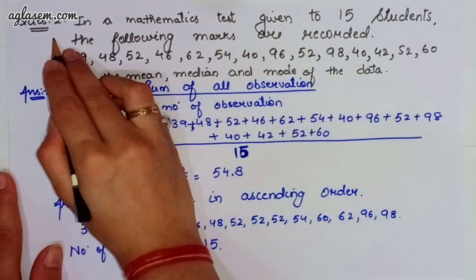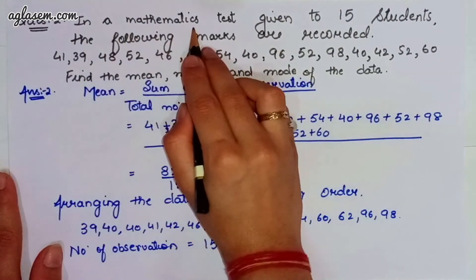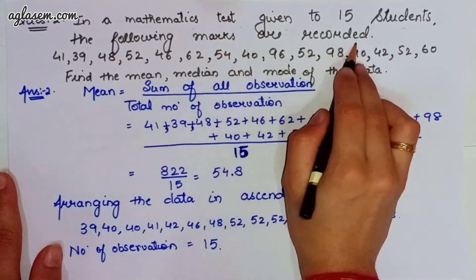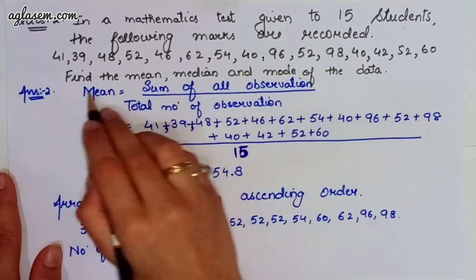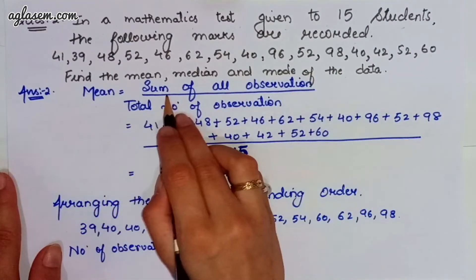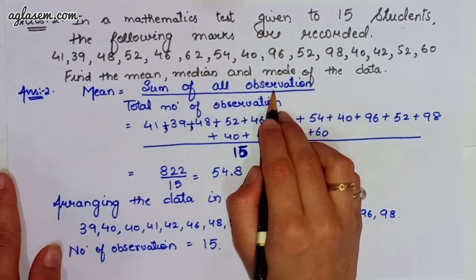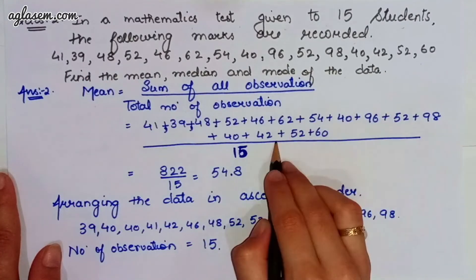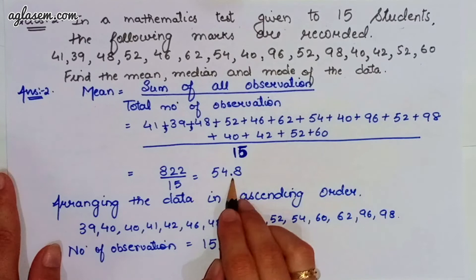Moving further to our second question, which says, in a mathematics test given to 15 students, the following marks are recorded. All these are given. We have to find mean, median, mode from this data. So, the mean, we know the formula, that is sum of all the observations divided by total number of observations. So, by adding all this divided by total number of observations, we will get 54.8.